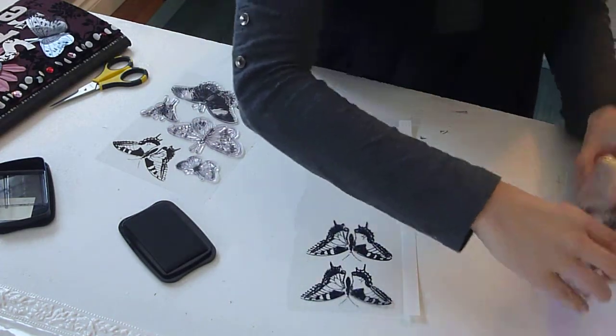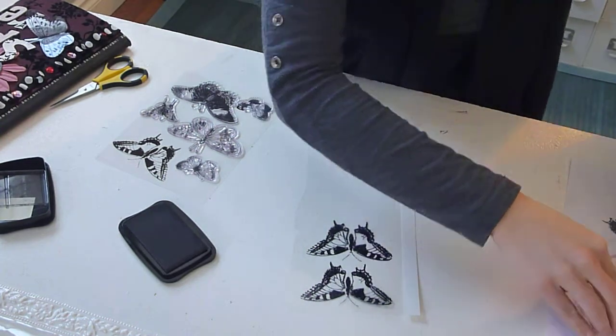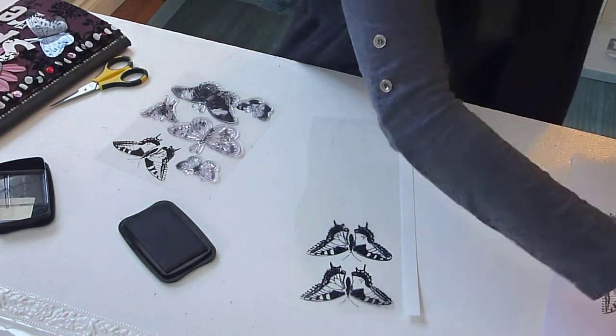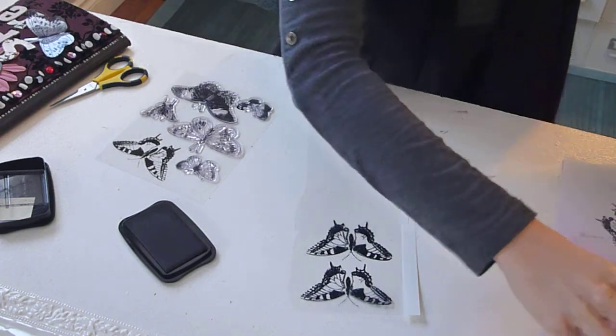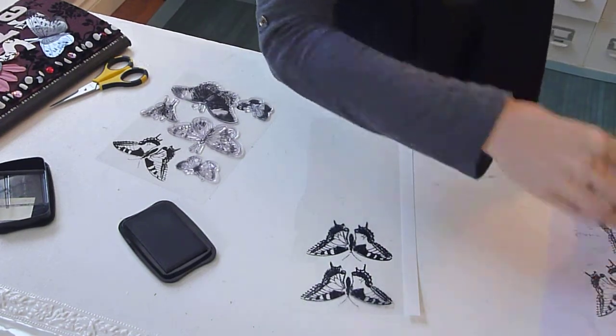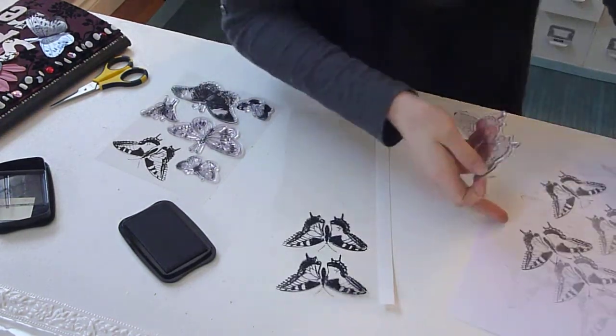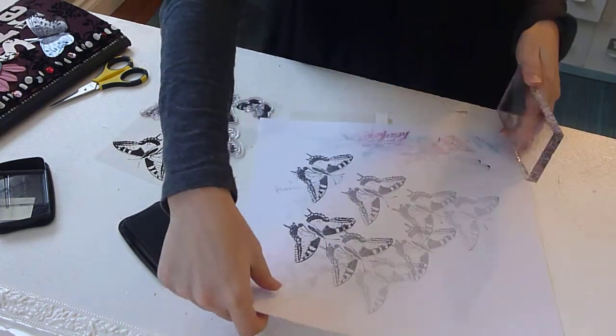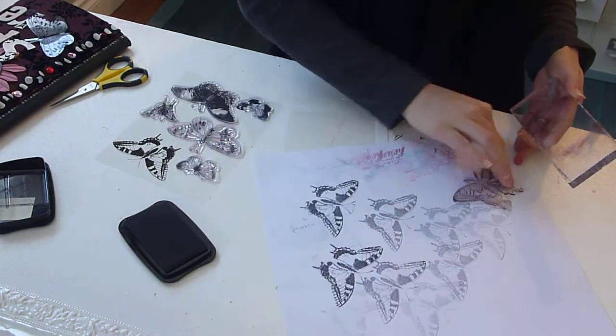Okay? Now, you could use StazOn ink remover to clean your stamp, but I'm just going to press it down a few times on some scratch paper. And it takes most of the ink off. So, you can see right here. That's what I do often.